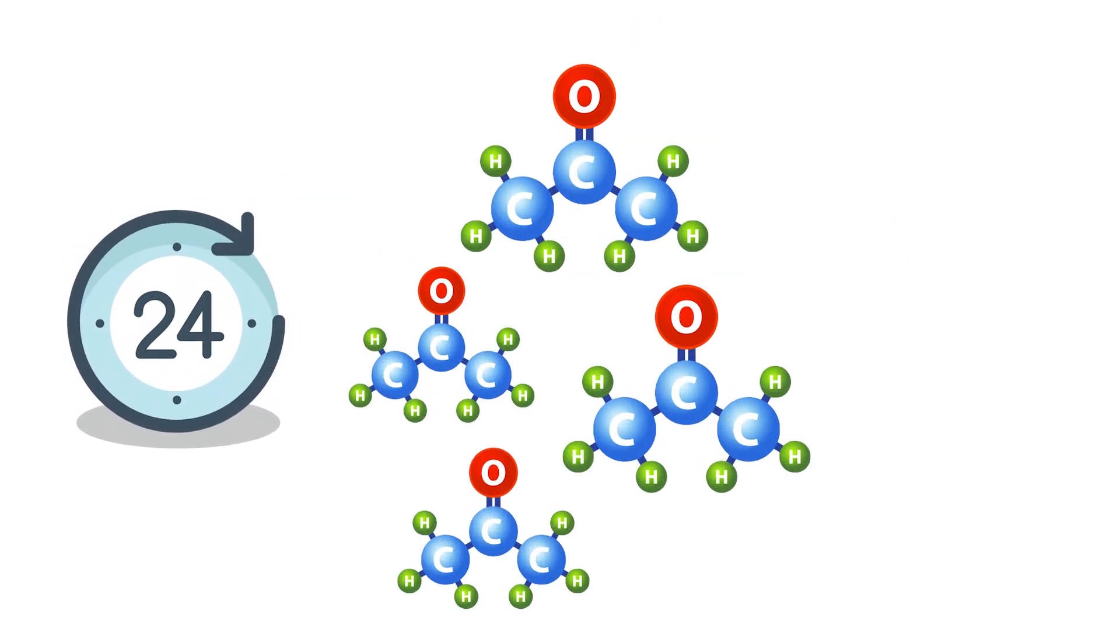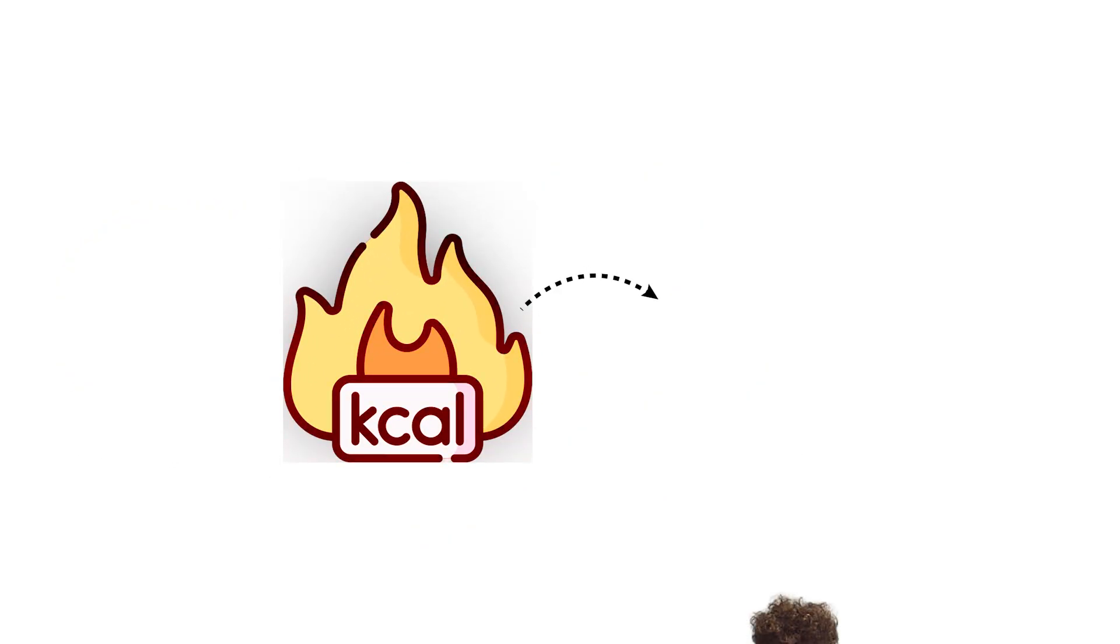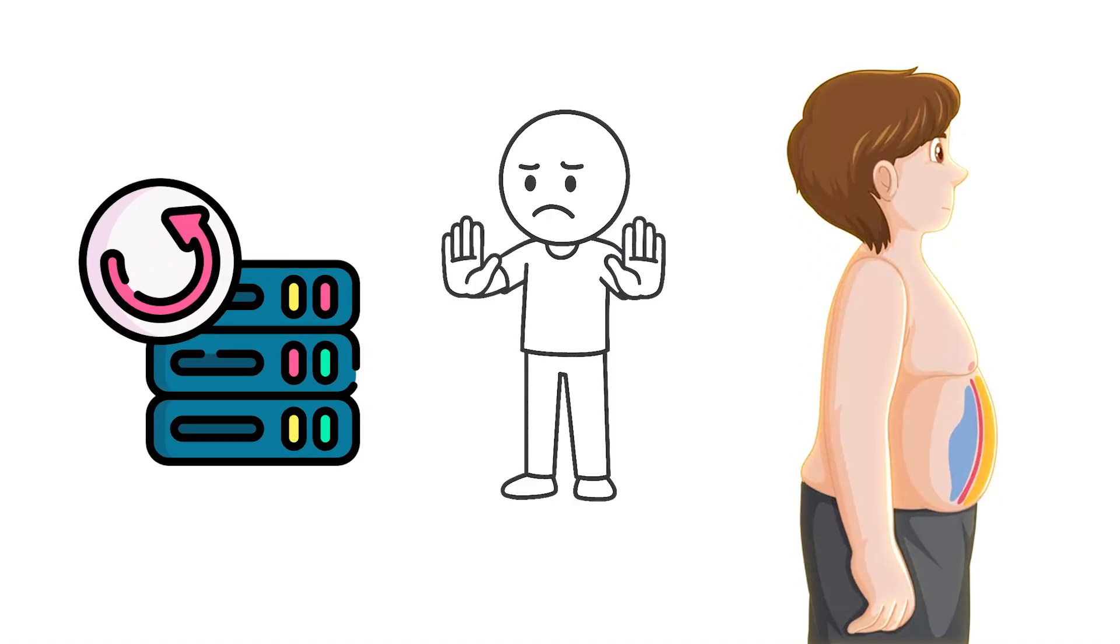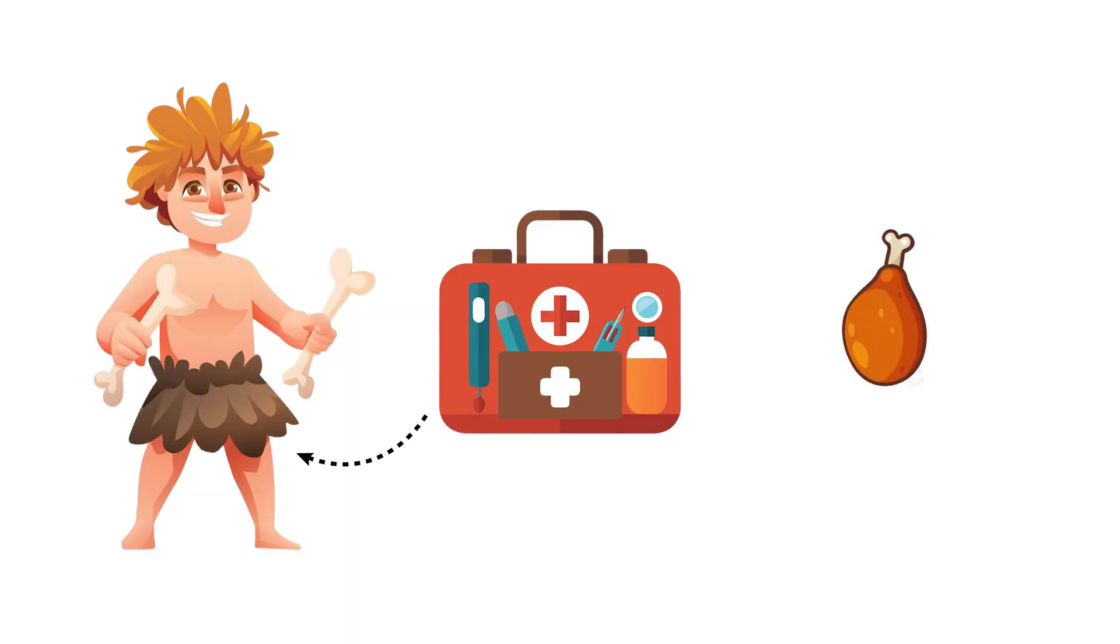By the 24-hour mark, ketone production is climbing, and your metabolism has entered what researchers call a catabolic state, where fat burning takes priority over fat storage. This isn't some backup system your body reluctantly turns to, it's an ancient survival tool that kept your ancestors alive when food was hard to find.